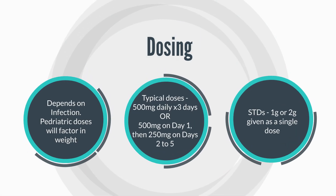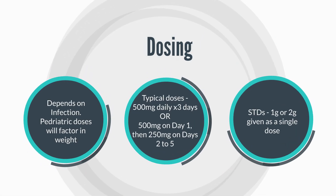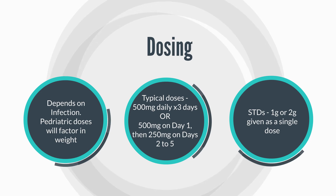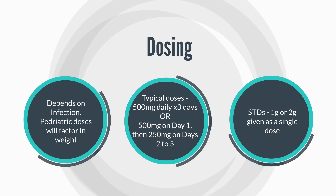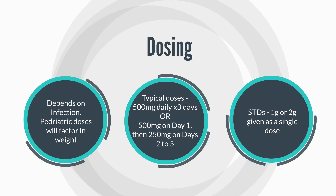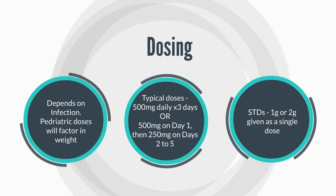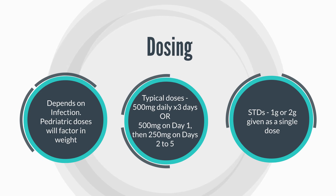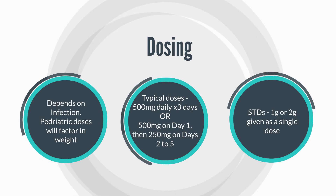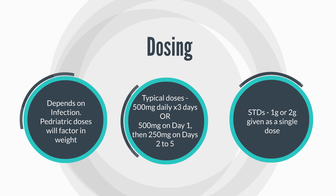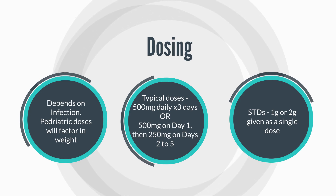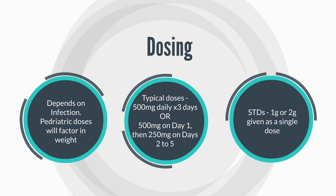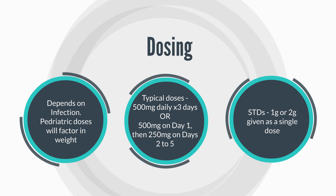With respect to dosing, it really depends on what kind of infection is being treated. Pediatric doses are typically based on weight. The most common dose you're likely to see in the pharmacy is either 500 milligrams taken daily for three days — what we call the tri-pack — or 500 milligrams on day one and then 250 milligrams on days two through five, which is the z-pack.